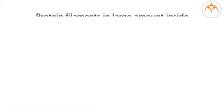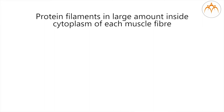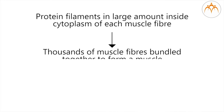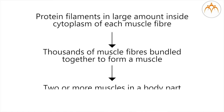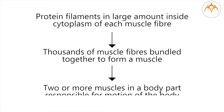In summary, protein filaments in large amounts inside the cytoplasm of each muscle fiber give rise to thousands of muscle fibers bundled together to form a muscle, which gives two or more muscles in a body part responsible for motion of the body. Thus, muscle fibers are the structural and functional units that enable humans with the ability to move.